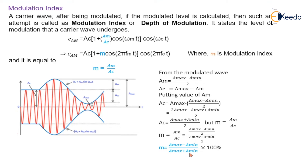The modulation index is always represented in terms of percentage modulation, so it is multiplied by 100.